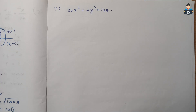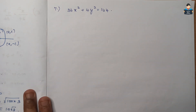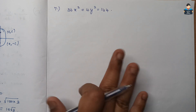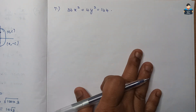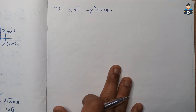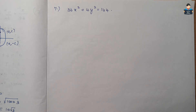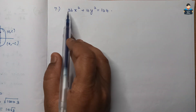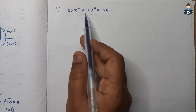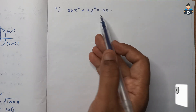Hello everyone, welcome to our channel. In this video we are doing Class 11 NCERT Chapter 10, Conic Sections, Exercise 10.3, Question number 7. In this video we will solve the sum and find vertices, length of major axis, minor axis, eccentricity, and latus rectum. The 7th question is: 36x² + 4y² = 144.